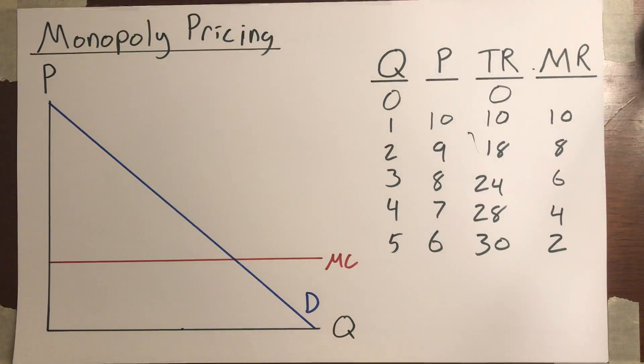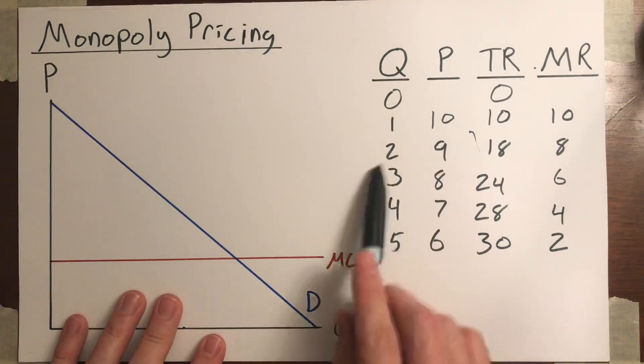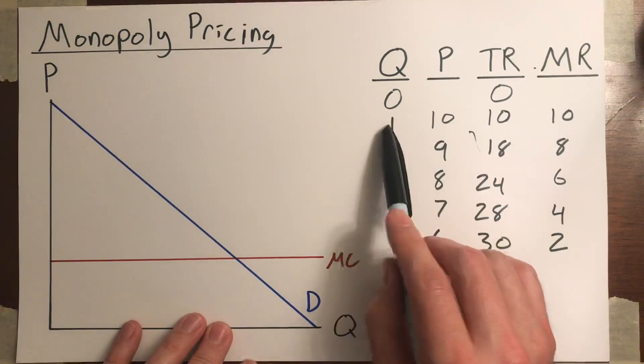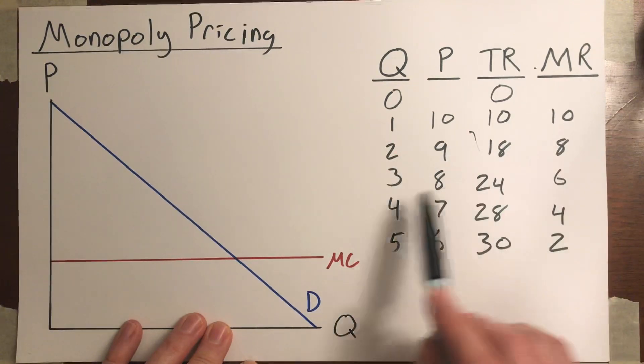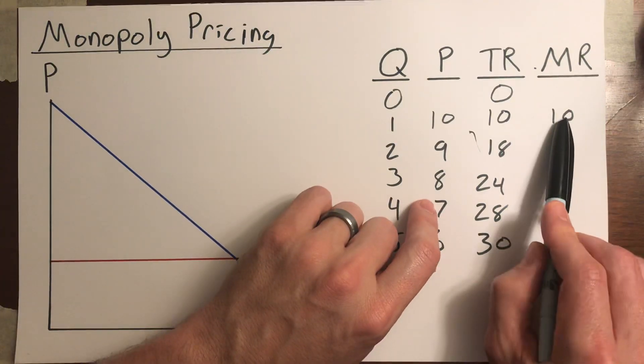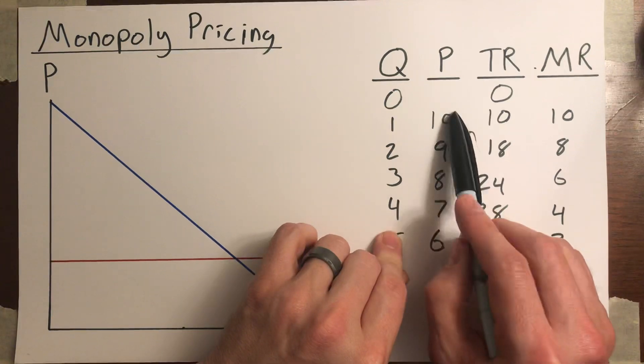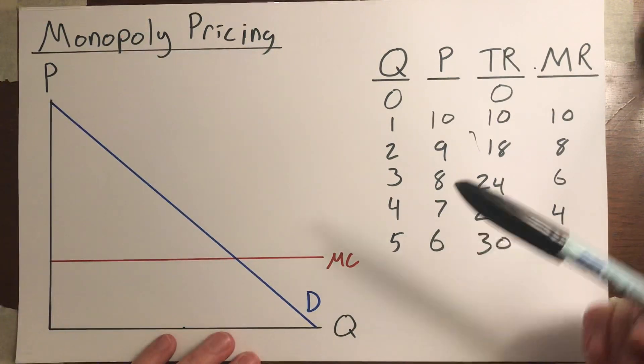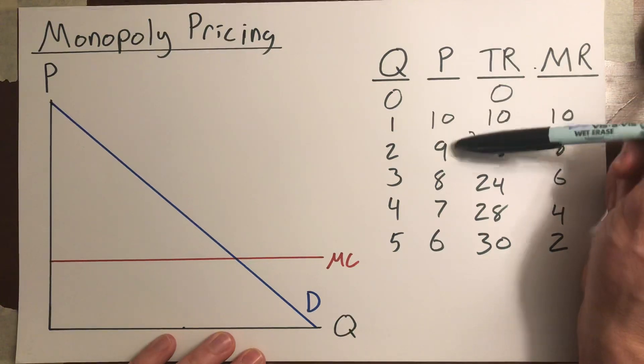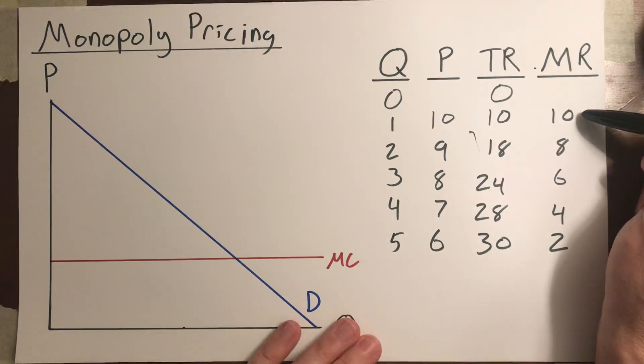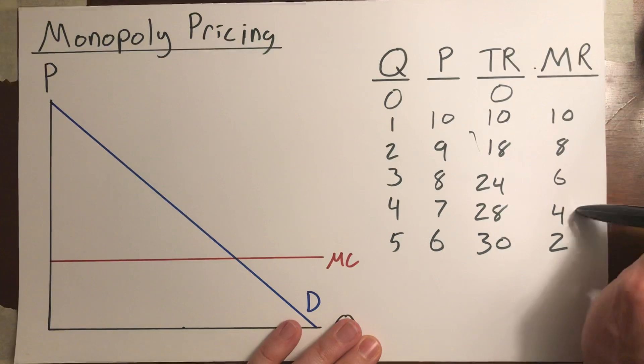Now, notice the relationship here. This quantity and price, these combinations, that's mapping out the demand curve. What about the quantity and marginal revenue? Well, that is mapping out what the marginal revenue curve looks like. And notice a couple of things. First of all, the marginal revenue starts at the same level as the price, which tells you that our marginal revenue curve is going to begin where the demand curve does at that same point. And now notice something else. The demand curve falls by $1 per unit: 10, 9, 8, 7, 6. The marginal revenue curve falls at $2 per unit: 10, 8, 6, 4, 2.